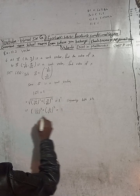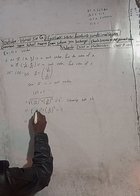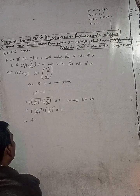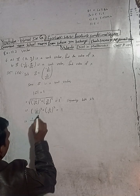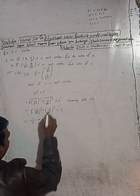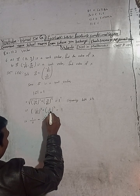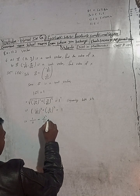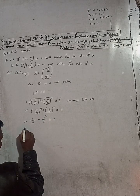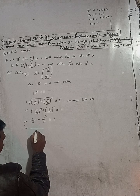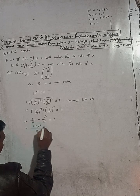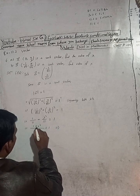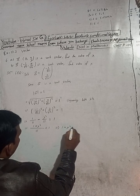Applying the unit vector condition: the x-component is (-1/√11) and y-component is (y/√11). So we get 1/11 + y²/11 = 1, which means one plus y squared is equal to 11.